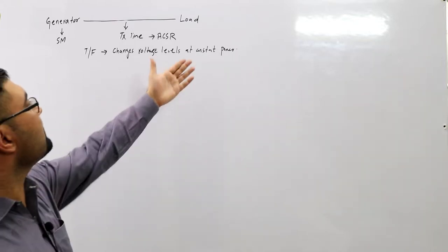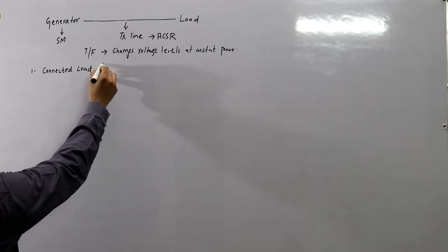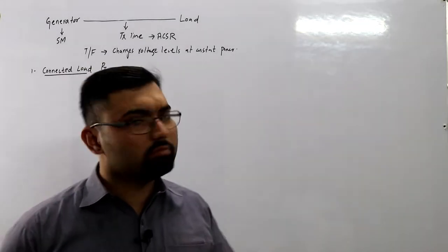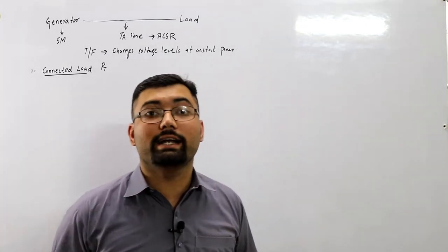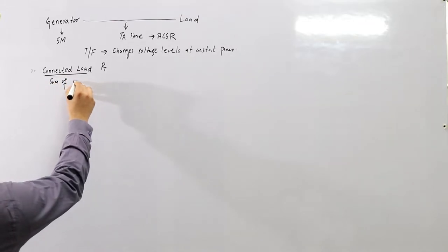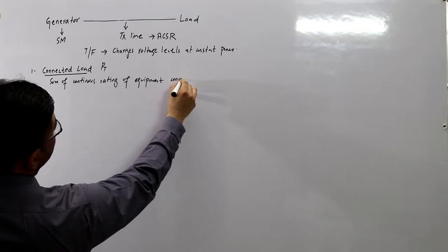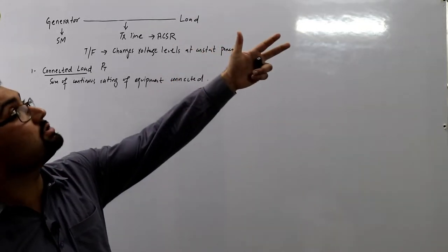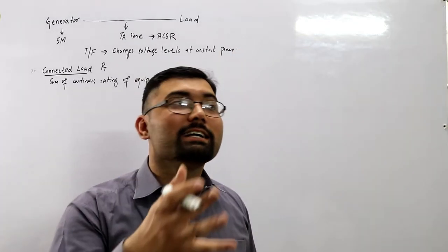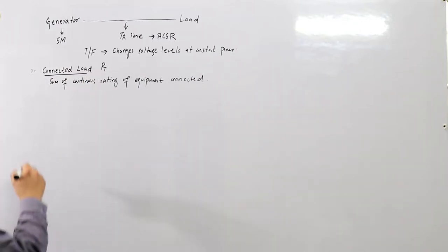Coming to the load end, the first basic term is connected load, represented by PT. The connected load is the sum of the continuous ratings of all equipment connected to the system — whether being used or not. For instance, if you have five lights and two fans but the fans are off, they are still part of the connected load because they are connected to the system.